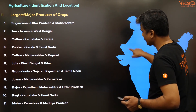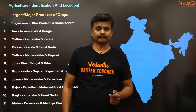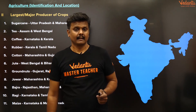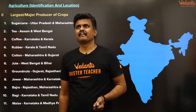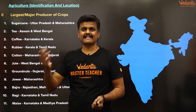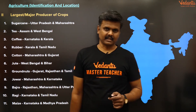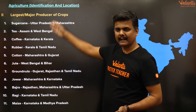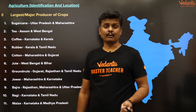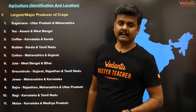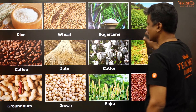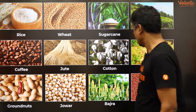Jowar is grown in Maharashtra and Karnataka. Maize is not just an edible crop — it's also used for feeding cattle — and it grows in Karnataka and Madhya Pradesh. So to summarize the full list: rice, wheat, sugarcane, tea, coffee, jute, cotton, rubber, groundnuts, jowar, bajra, ragi, and maize.